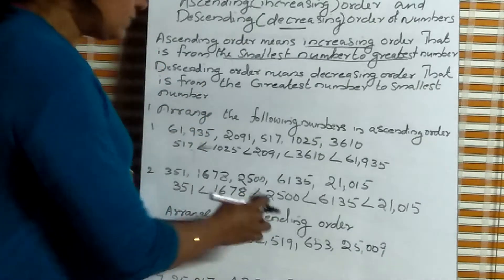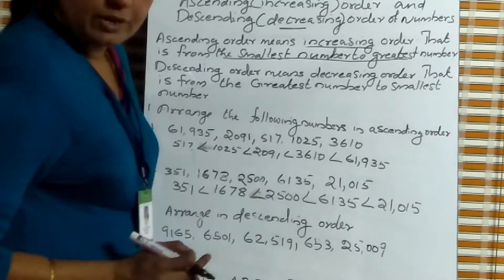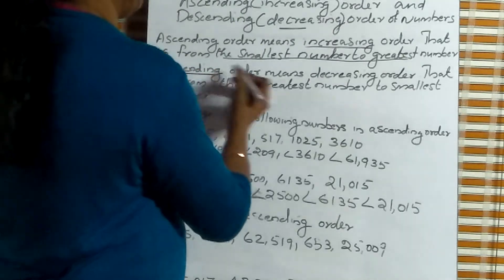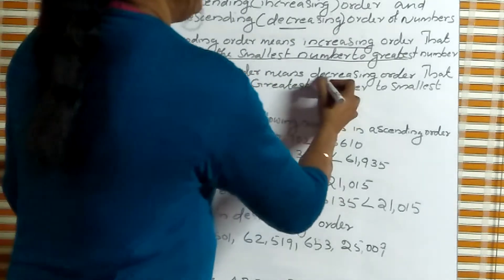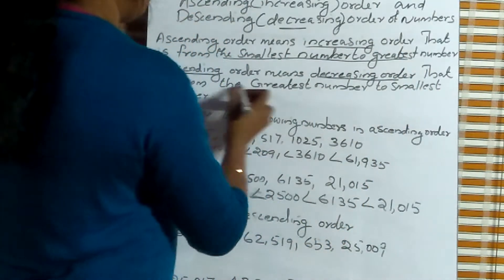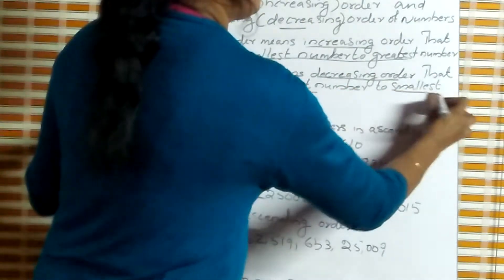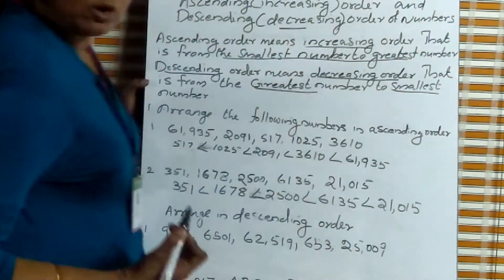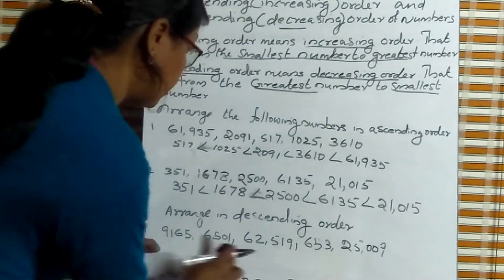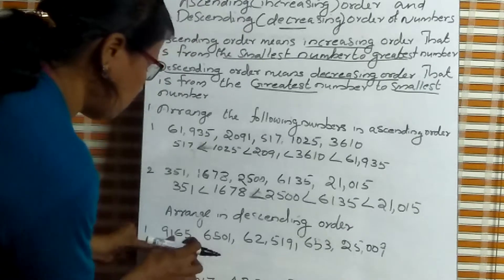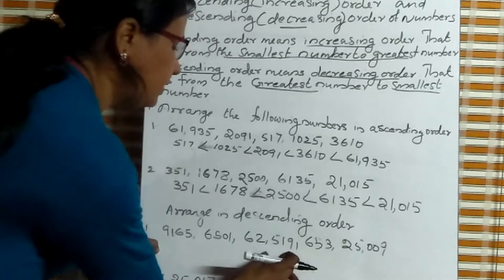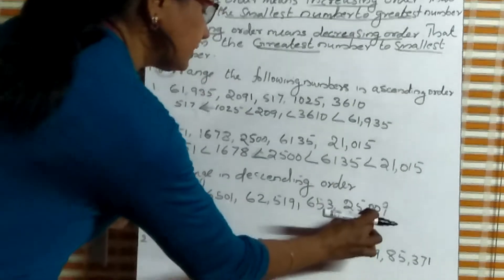Now arrange in descending order. Descending order means decreasing order — that is from the greatest number to smallest number. Which is the greatest number in this group? We have four-digit, four-digit, five-digit, and three-digit numbers.